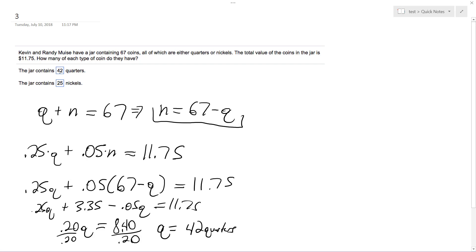Okay, so we have Q, so 42 plus N - this is the first equation we wrote - equals 67. So minus 42, minus 42, we get N equals 25. So 25 nickels and 42 quarters, and that's it.